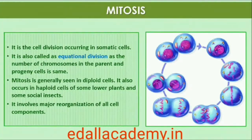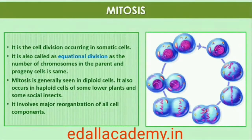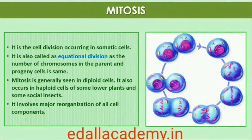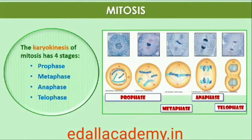The M-phase is the most dramatic period of the cell cycle, involving a major reorganization of virtually all components of the cell. Since the number of chromosomes in the parent and progeny cells is the same, it is also called equational division. Though for convenience mitosis has been divided into four stages of nuclear division, cell division is a progressive process and very clear-cut lines cannot be drawn between various stages. Mitosis is divided into the following four stages: Prophase, Metaphase, Anaphase, and Telophase.